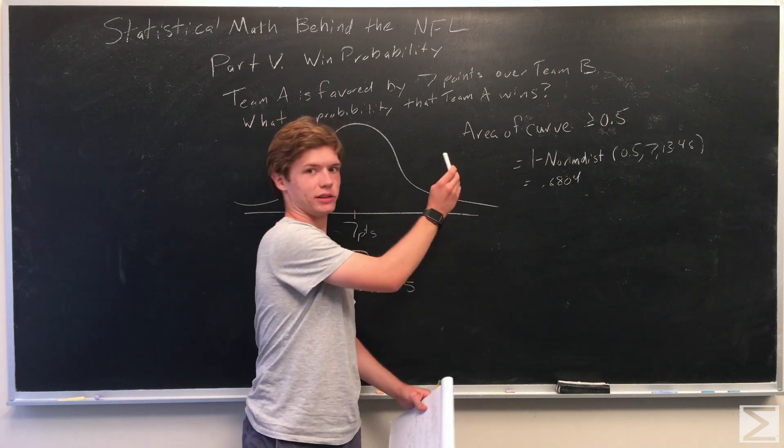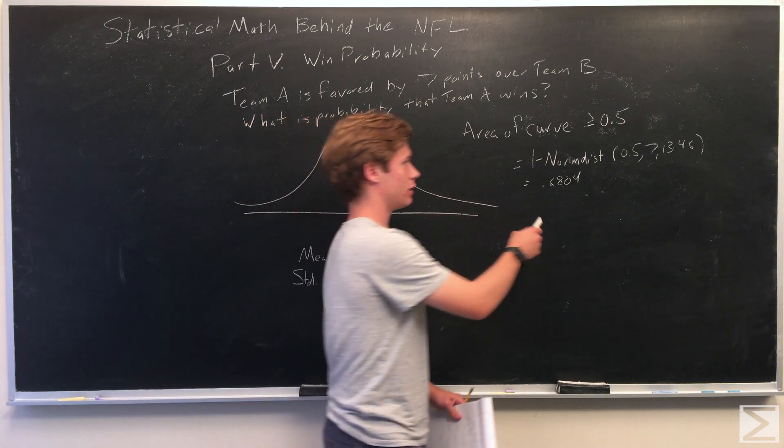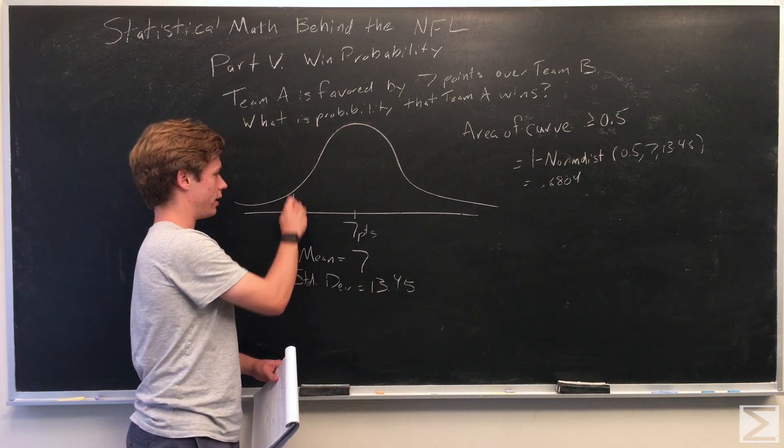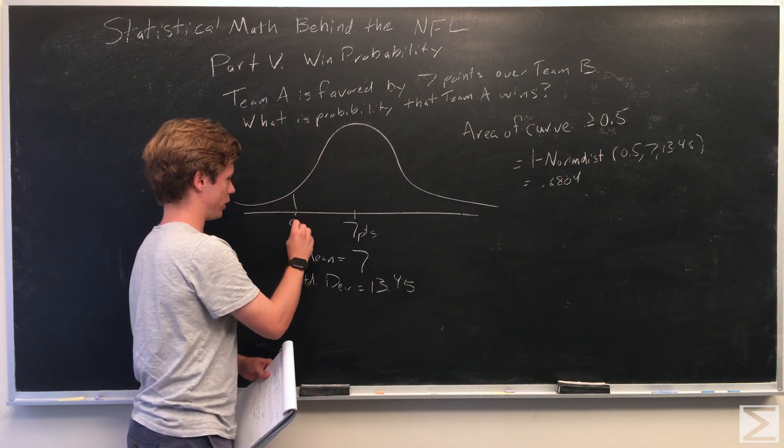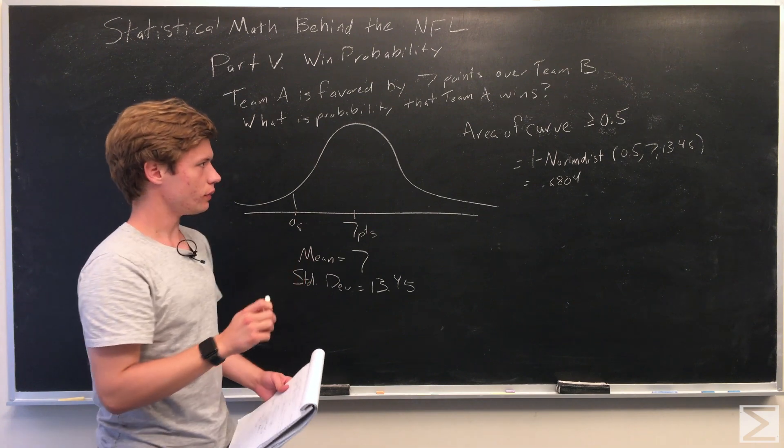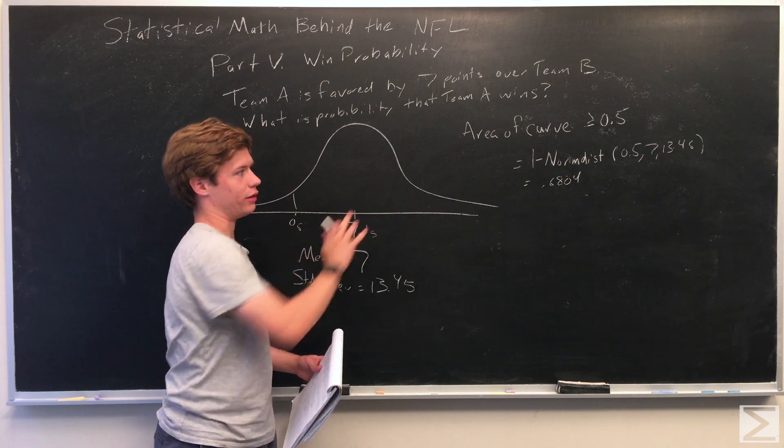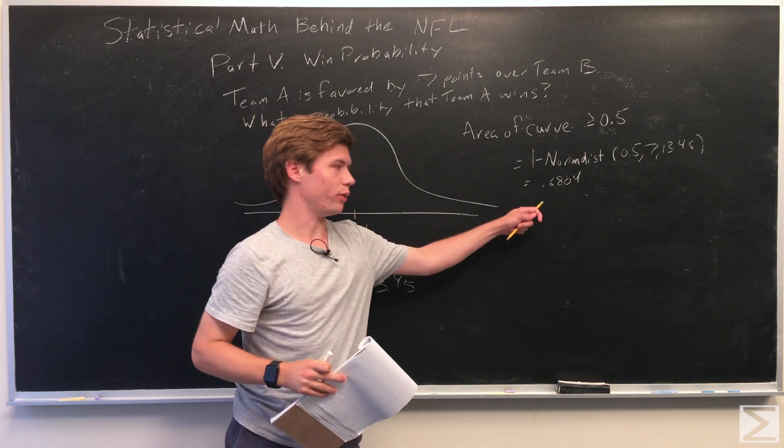So you can see we just subtracted the area to the left of this where this is equal to 0.5. So we subtracted that area and found that the area of this section is equal to 0.6804.